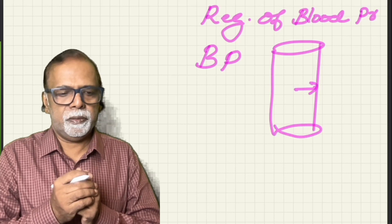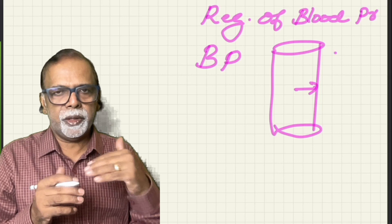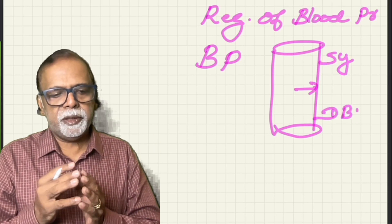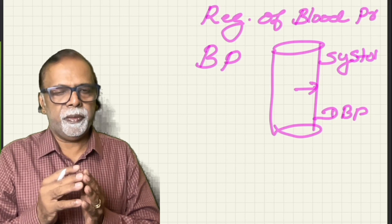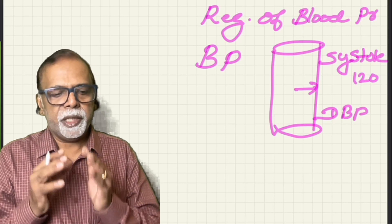Blood pressure is divided into systolic blood pressure and diastolic BP. The maximum pressure exerted in the arteries during systole is systolic BP, which normally is 120 millimeters of mercury.